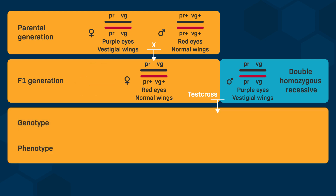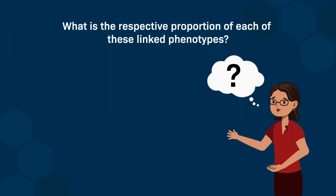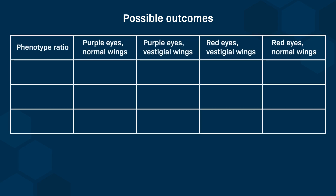The results of this test cross are progeny with four possible phenotypes: purple eyes with normal wings, red eyes with vestigial wings, purple eyes with vestigial wings, and red eyes with normal wings. If we follow Mendel's second law, eye color and wing shape will segregate independently, meaning the four possible genotypes and corresponding phenotypes are equally probable — we would find 25% of each phenotype in the progeny.